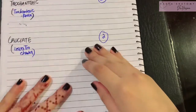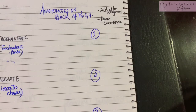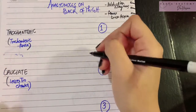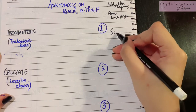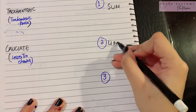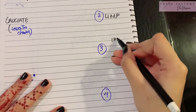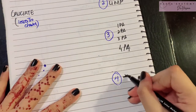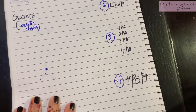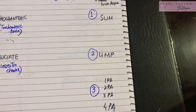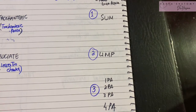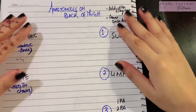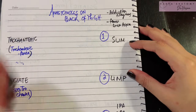From above downwards, various types of anastomosis are occurring. There are four steps in the process, and the mnemonic is: Slim, Limp, One, Two, Three, Four, Pop. This mnemonic will help you easily remember the sequence, as this is an important examination question.